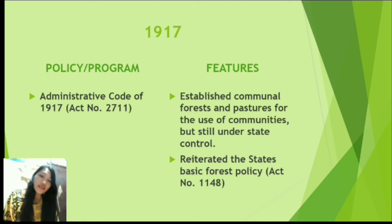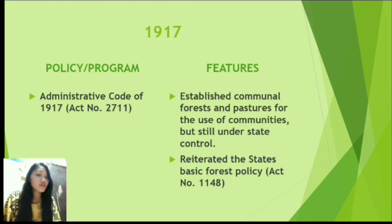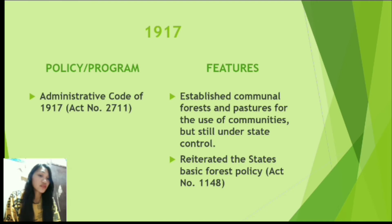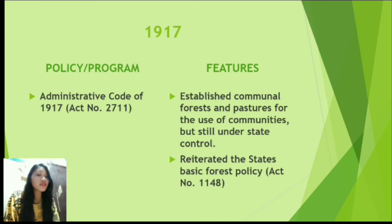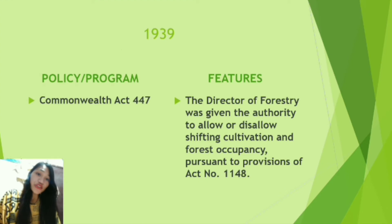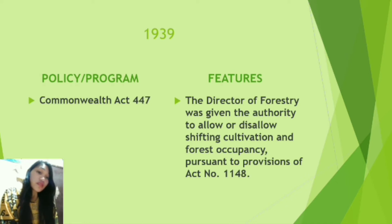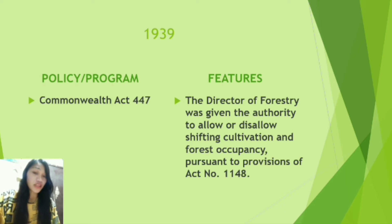In 1917, the Administrative Code, Act Number 2711, the state established communal forests and pastures for the use of communities, though still under state control. This policy reiterated the basic forestry policy of Act Number 1148 from 1904. In 1939, Act Number 447 of the Commonwealth gave the Director of Forestry the authority to allow or disallow shifting cultivation and forest occupancy in accordance with Act Number 1148.